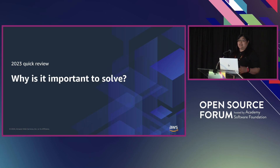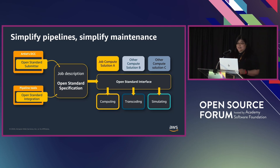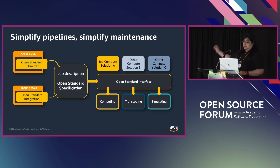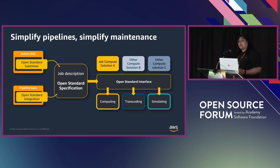Why is unnecessary complexity the important thing to solve? The most straightforward way to summarize this is to be able to simplify pipelines and thus simplify maintenance with an open standard for describing jobs. On the left-hand side, I've got some artists and pipeline tools that describe jobs using the same description specification. On the right-hand side, some example compute solutions — some more generalized, some more specialized — but they all speak the same job description standard, or can have a translation layer built to convert from the open standard to a proprietary format.